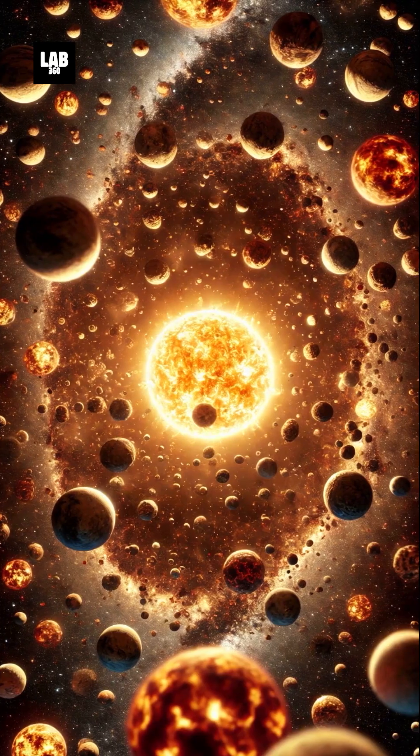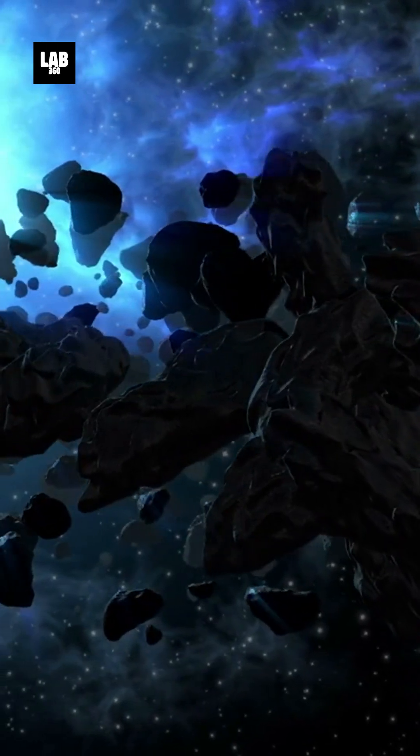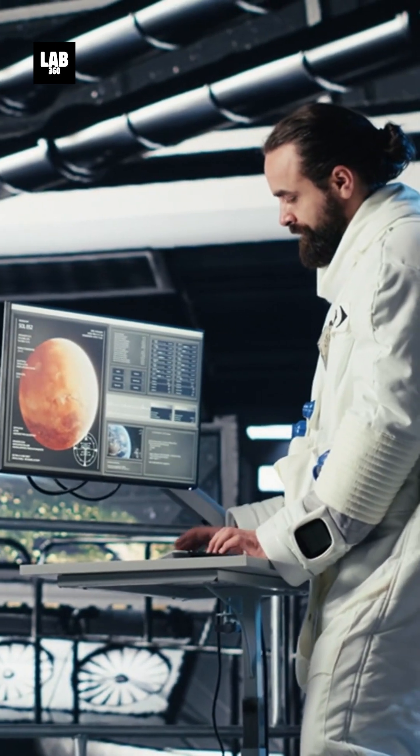In the beginning, the solar system was packed with hundreds of protoplanets, small, rocky, and icy bodies vying for space. But only the strongest survived. Scientists have found many reasons for this disappearance.